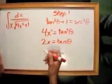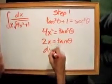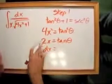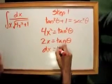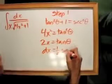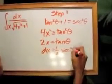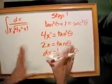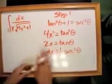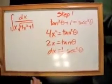So then, we square root that and we get 2x equals tangent theta. And then you derive it and you get dx equals, move the 2 over here, so you get one half secant squared theta dtheta. So, these are your substitutions. Remember this.